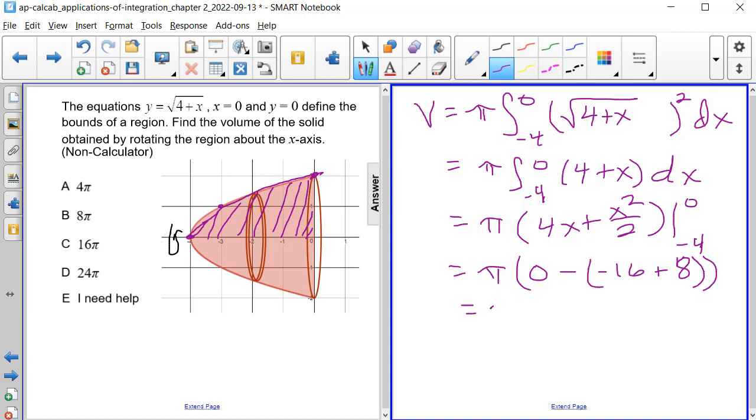So we're going to have pi times 0 minus negative 16 plus 8 is negative 8, or pi times positive 8, because the minus negative make a plus positive. So we have 8 pi as our answer, or answer choice B.